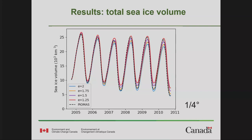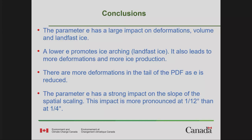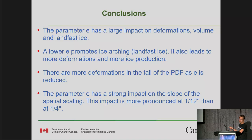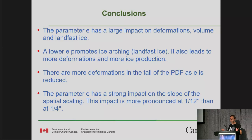There's also a huge impact on the sea ice volume. Our simulations are short so we'd need more time to investigate, but the impact is huge. This is consistent with what Miller et al. have seen in their low-resolution simulations — the impact of E is huge. This would require more study to see if we also improve the geophysical distribution of thickness. Our conclusions: parameter E has a large impact on deformation, volume, and land fast ice. A lower E promotes ice arching, giving more land fast ice, leads to more deformation and more ice production — which explains the larger volume. There are more deformations in the tail of the PDF, and a strong impact on spatial scaling. Thank you very much.